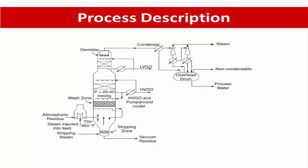LVGO will be sent to the vis breaking unit for the production of low-viscosity fuel oil, whereas the MVGO and HVGO also can further strip in additional side stripper by steam to remove the lighter component to adjust the flash point.